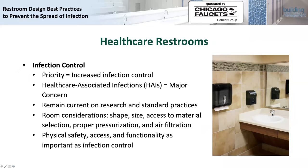As we consider infection control with our restrooms, the things we're really looking at are the number of times you have to touch or contact a surface to take care of business in the restroom, and then once you've actually touched a surface, how you wash your hands and whether you can exit without touching anything else. Those are key sequence decisions. Even things like toilet seat covers that were somewhat marginal are going to achieve higher priority consideration by building owners and designers moving forward.